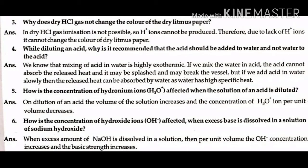Question number 3: Why does dry HCl gas not change the color of the dry litmus paper? Answer: In dry HCl gas, ionization is not possible, so H+ ions cannot be produced. Therefore, due to lack of H+ ions, it cannot change the color of dry litmus paper.